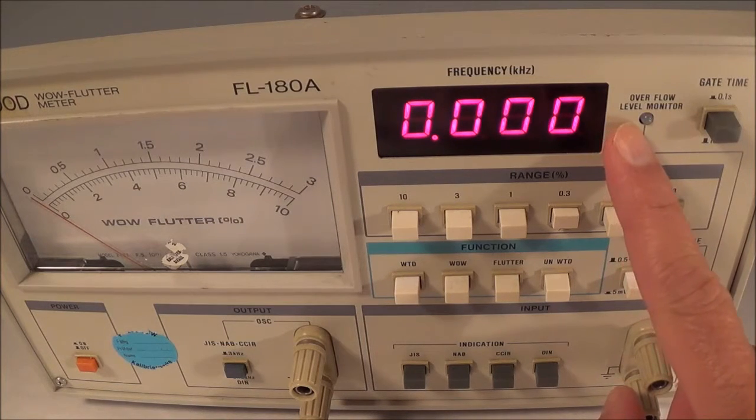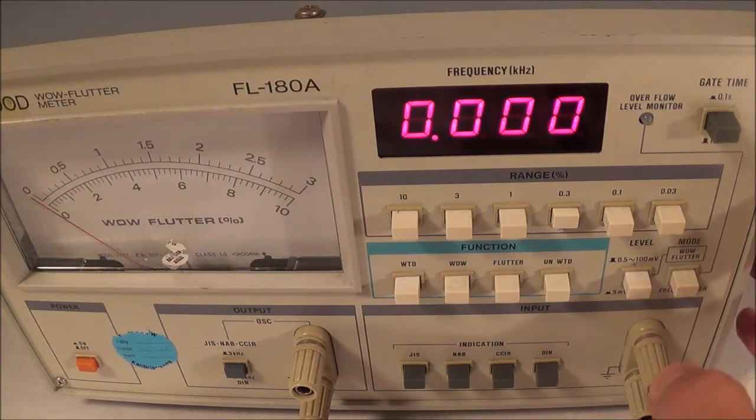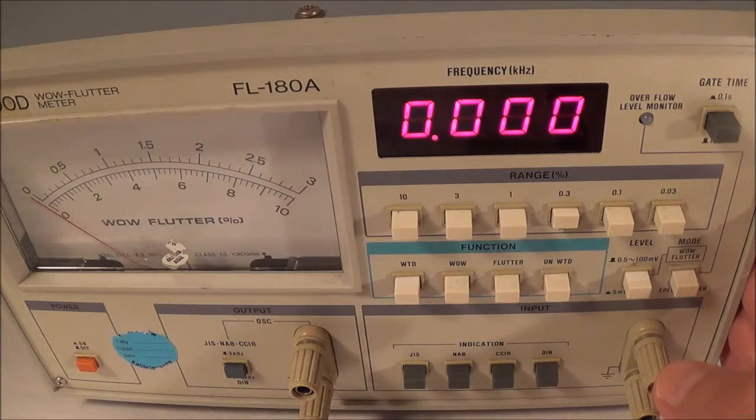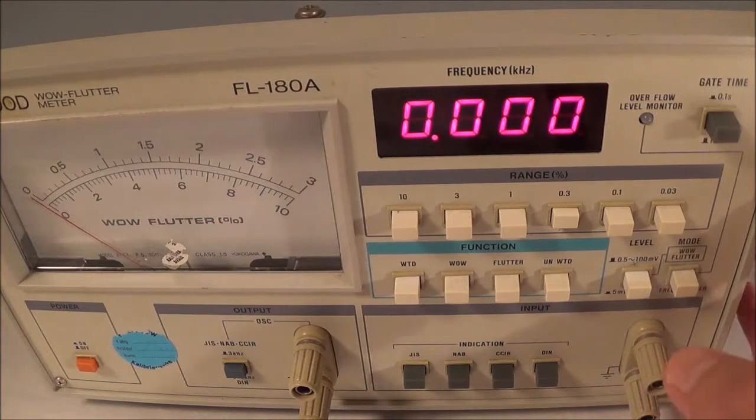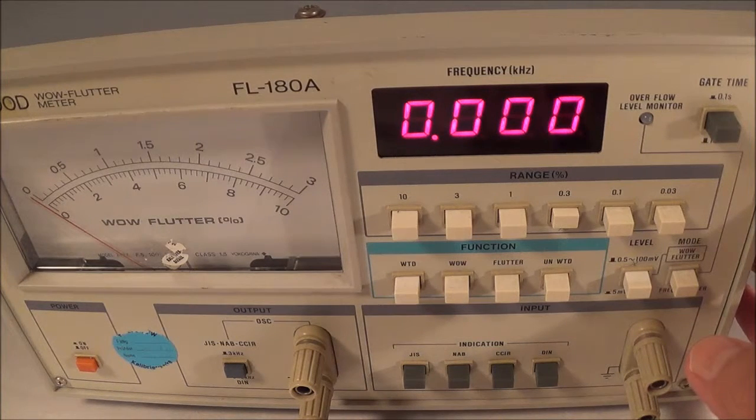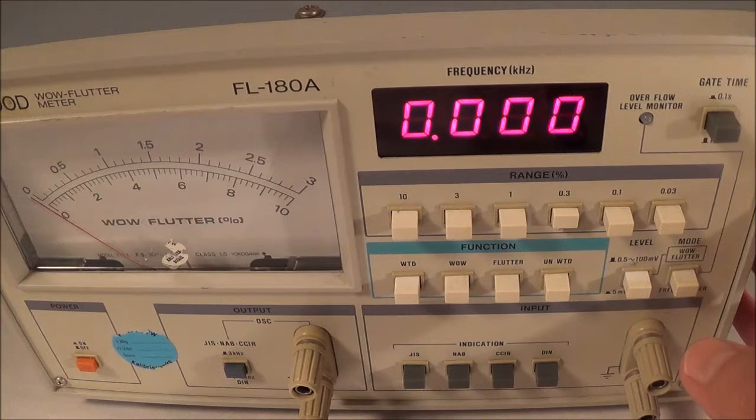As the name says, the wow flutter meter measures wow and flutter. You can think of it as speed fluctuation. Simply put, the meter measures frequency deviation. About the wow part of the meter, Kenwood, the manufacturer, considers anything from 0.5 to 6 Hertz as the wow component, and anything from 6 to 200 Hertz is considered to be flutter. The wow is a slow variation and the flutter is a rapid variation.